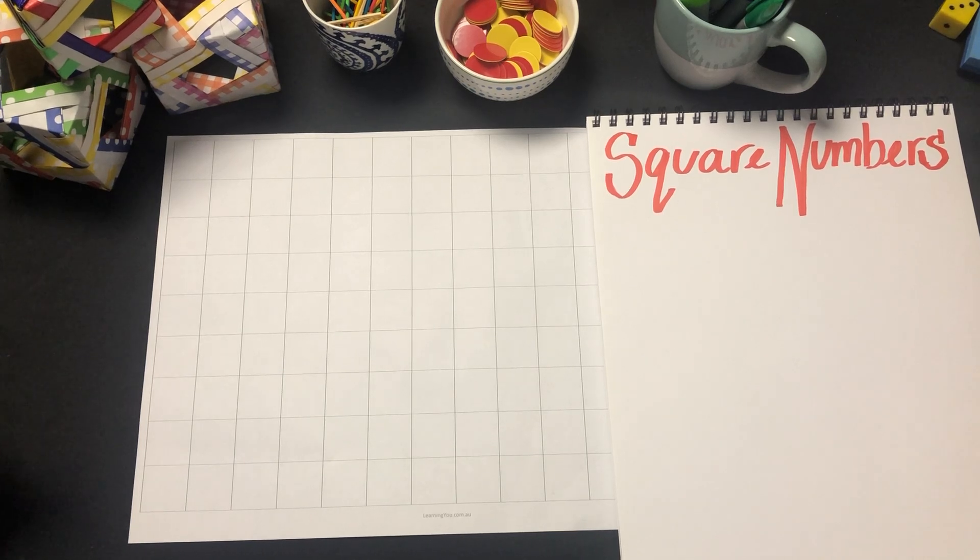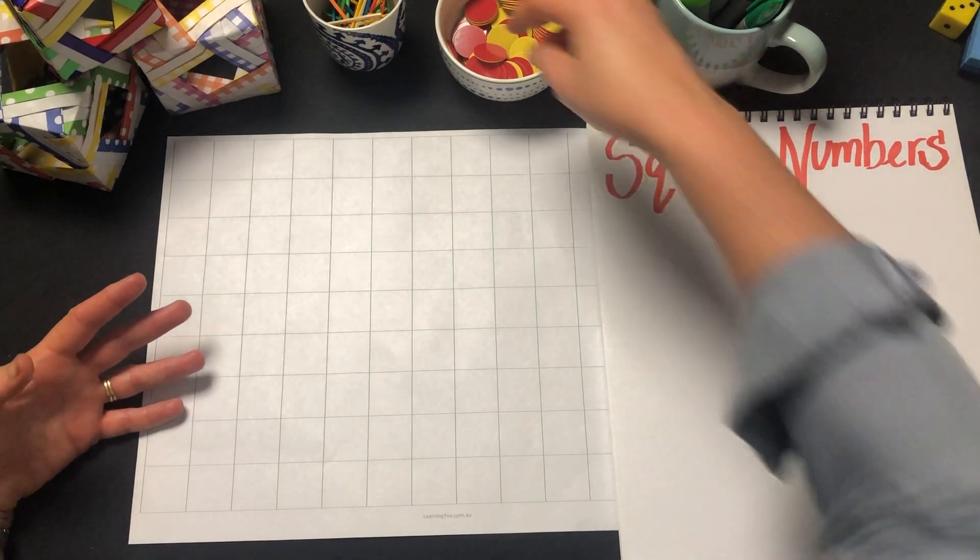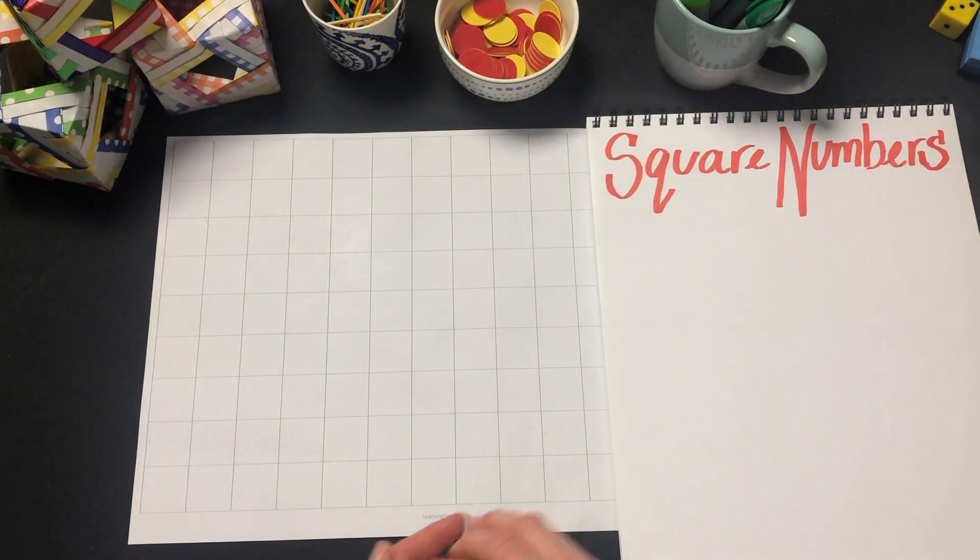Welcome to this video where we're going to explore square numbers. A square number is a number that we can form a square with.